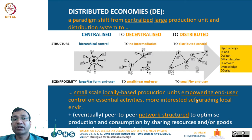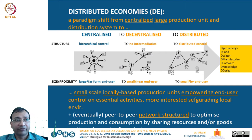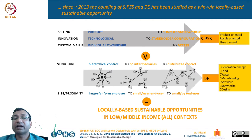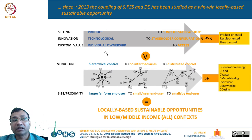Small-scale locally based production units empower end-user control on essential activities and are more interested in safeguarding the local environment. The SPSS concept involves shifting the selling point from product to unit of satisfaction, innovation from technology to stakeholder configuration, and customer value from individual ownership to access to products or services. Compared to this, the distributed economic model shifts from hierarchical centralized to distributed models — these are the two philosophies discussed in this lecture.